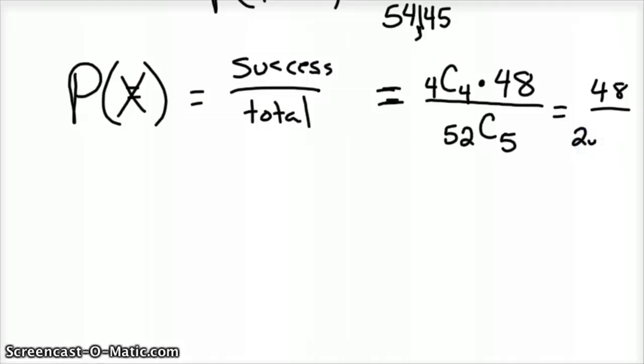So if you reduce that, that's one in 54,145. So it comes out the same. And so that's probably the more accurate way to look at it, but they both work. Hope that one helped.